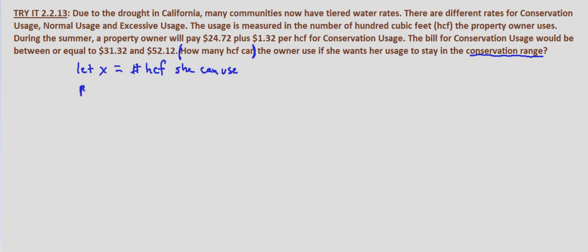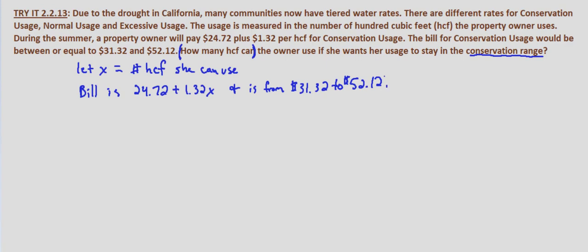We know the bill is $24.72 as a base plus $1.32 per HCF, so times X. And we know it's from $31.32 to $52.12, so let's put that into a compound inequality: 31.32 is less than or equal to 1.32X plus 24.72, and that is less than or equal to $52.12.